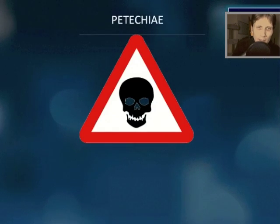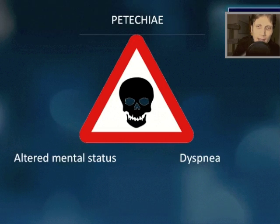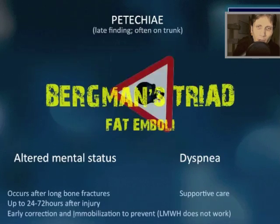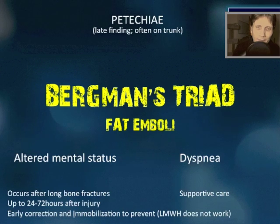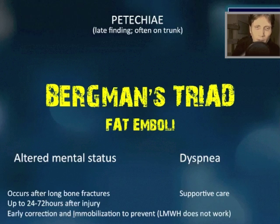Petechiae, altered mental status, and dyspnea — what triad is this and what is the associated phenomenon? Petechiae is often a late finding, commonly seen on the trunk. This is Bergman's triad, and the associated phenomenon is fat embolism. This often occurs after long bone fractures, up to 24 to 72 hours after injury. Early correction and immobilization is used to prevent it — low molecular weight heparin does not work.